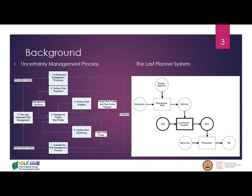Starting with the background — much of it lies in this picture. We have the last planner system, which I guess all of you already know. Of course it's about constraints, removing constraints, and it's also about risks. But from traditional project management, we have saying that uncertainty management is an important issue to handle uncertainties.